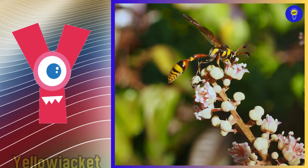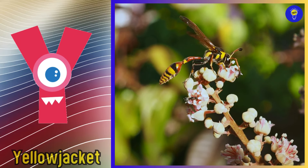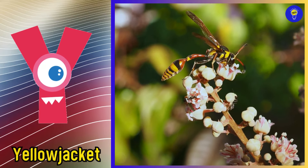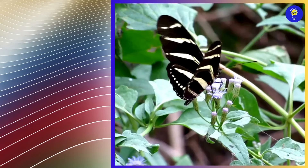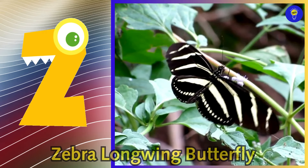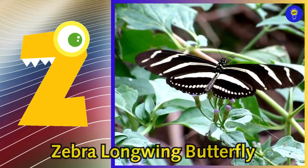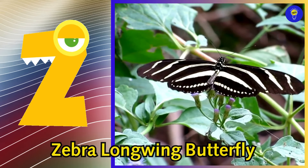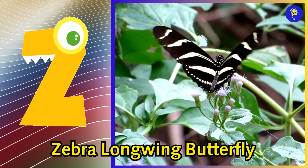Y is for yellow jacket, y, y, yellow jacket. Z is for zebra longwing butterfly, z, z, zebra longwing butterfly.